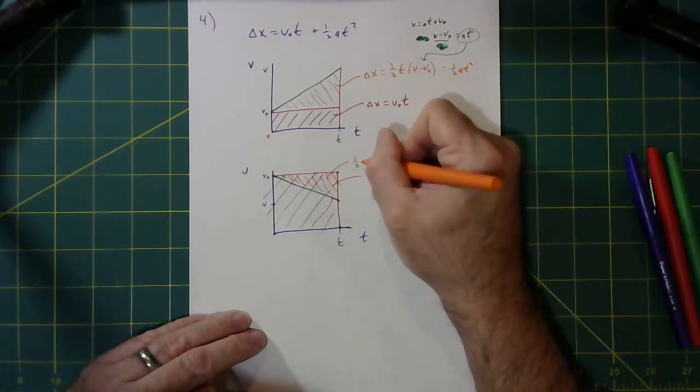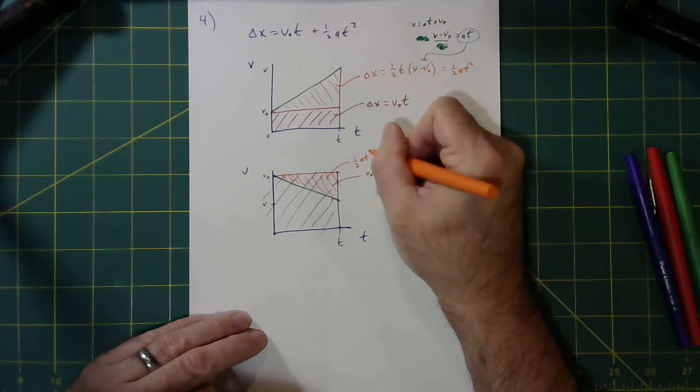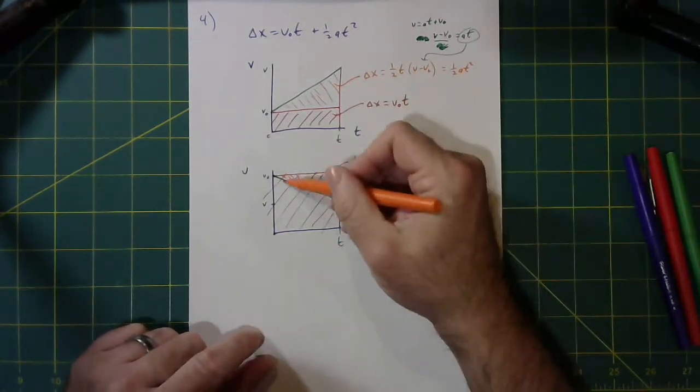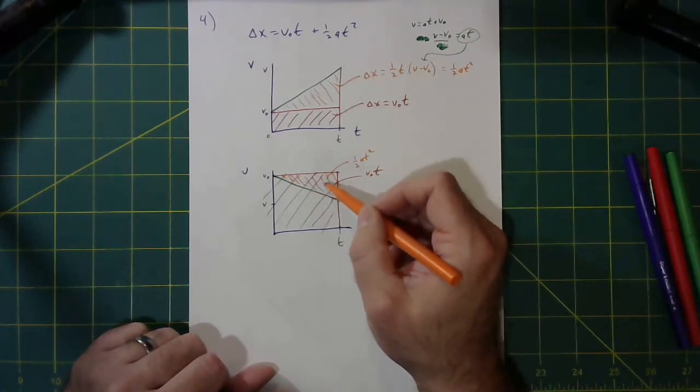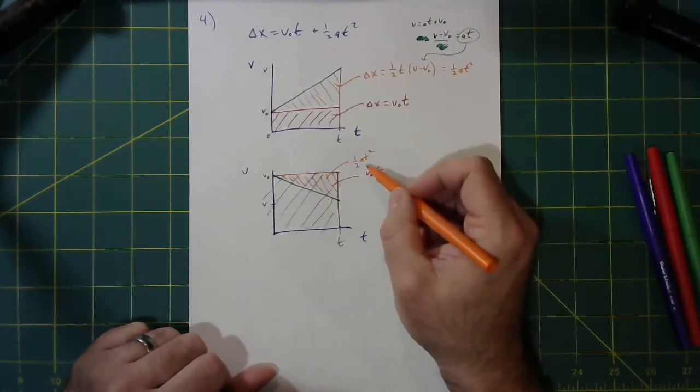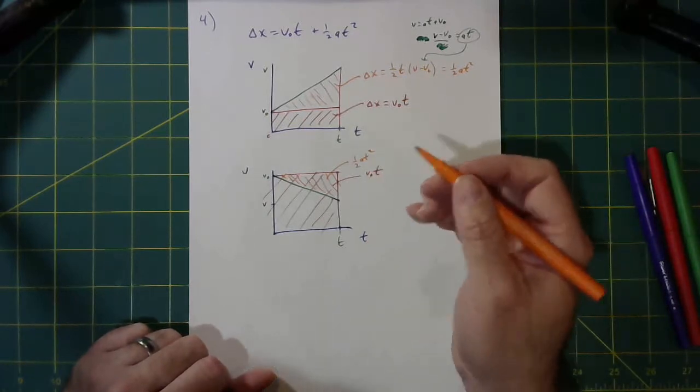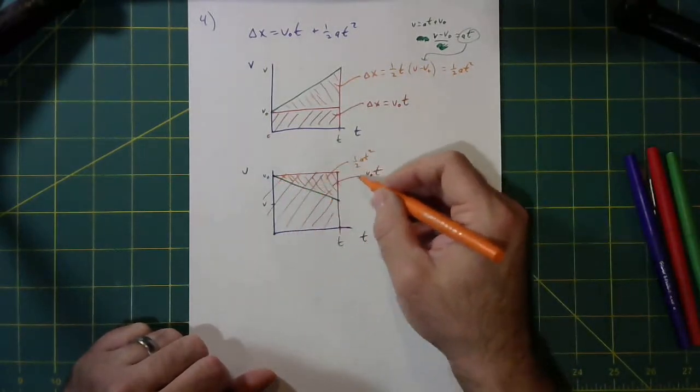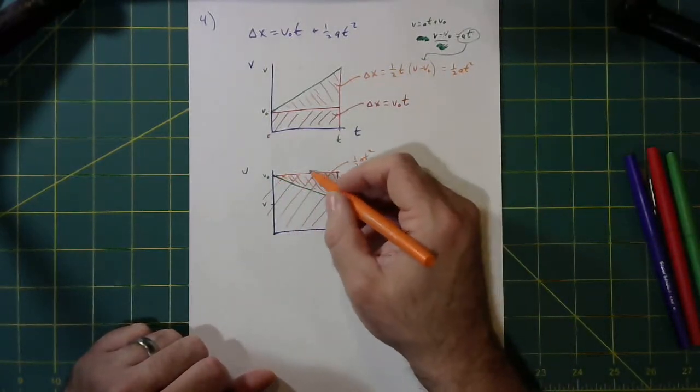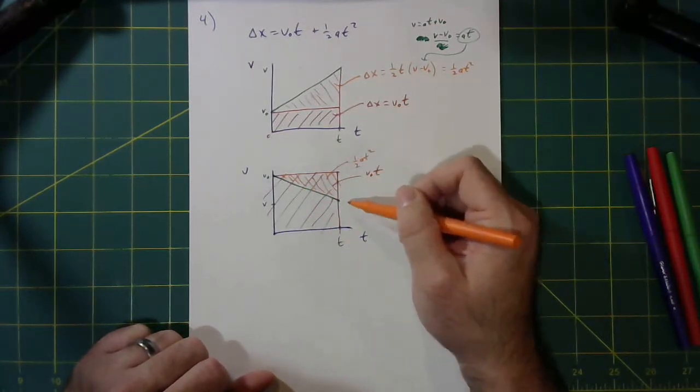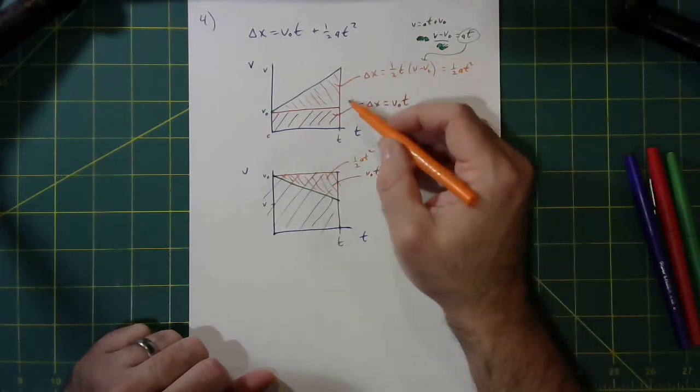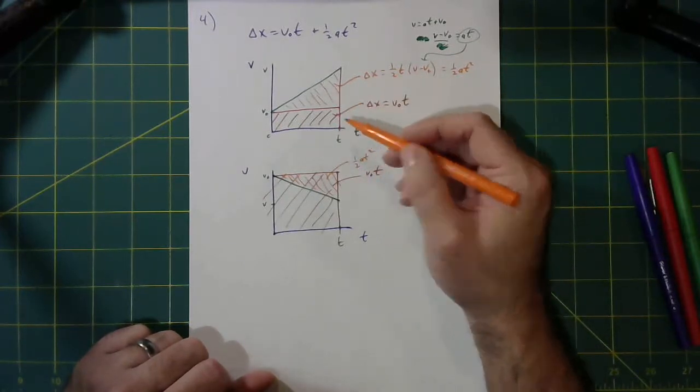This is that one half at squared term. Half of this height, times time squared. So the point is, because in this case my acceleration is negative, I'm going to be subtracting this triangle off from the rectangle. Here, where my acceleration is positive, I'm adding this triangle to the rectangle, essentially.